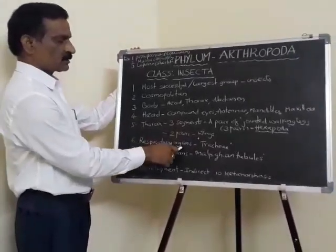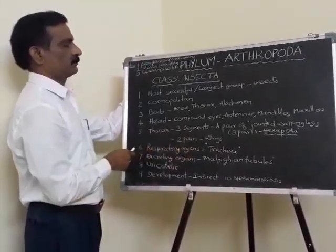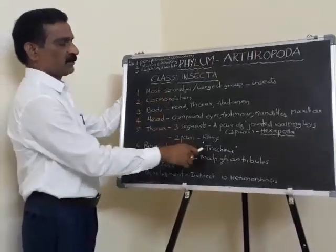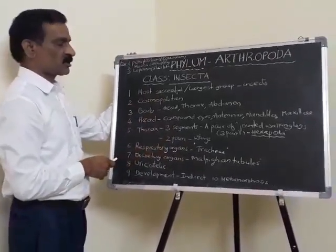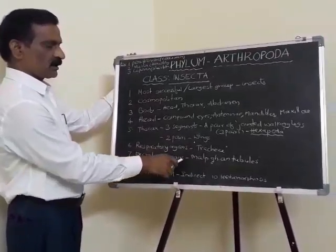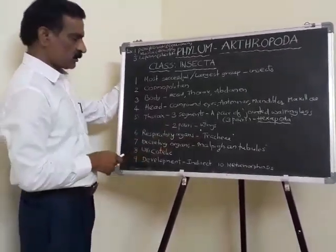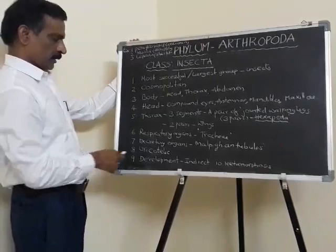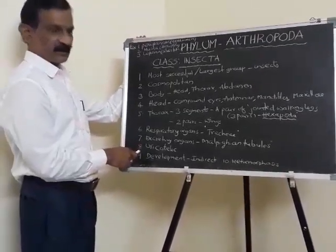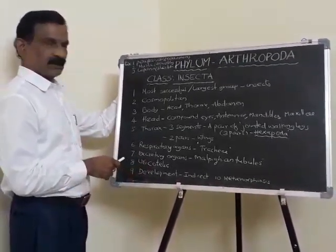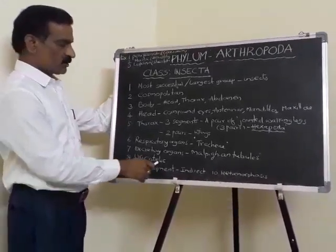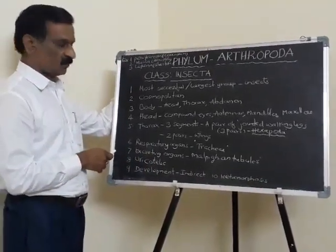The respiratory organs are trachea. As they are terrestrial animals, tracheal respiration is present. The excretory organs include Malpighian tubules. They are uricotelic — they excrete crystals of uric acid, which helps in the conservation of water.